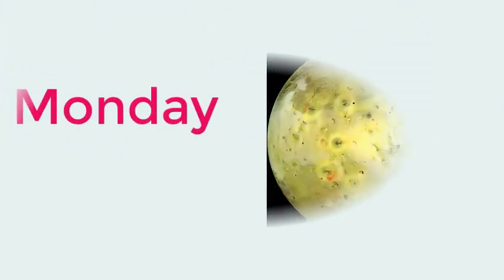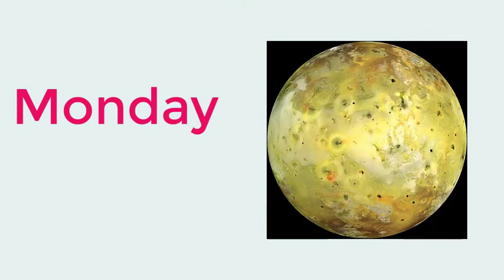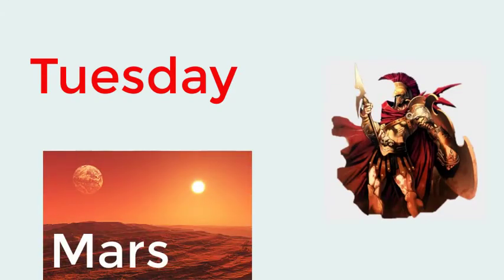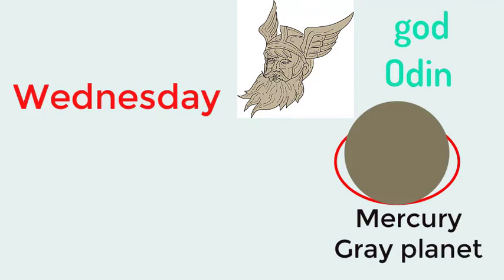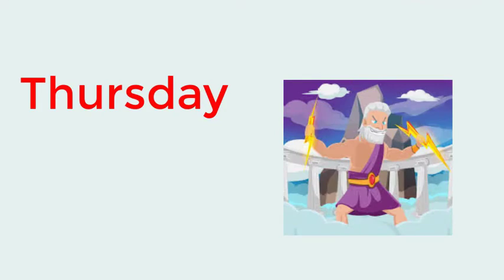Monday represents the moon. Tuesday represents the God of war, equated with Mars, the Roman war god. Wednesday was named after a ruler associated with wisdom, magic, victory, and death — connected to Mercury, as they were both guides of souls after death. Thursday represents the God of Thunder, representing strength and protection, associated with the Roman god Jupiter, king of the gods and god of sky and thunder.